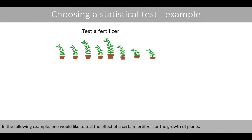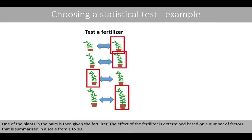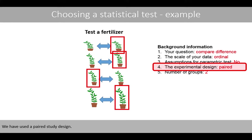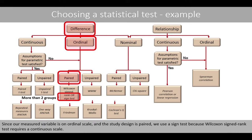In the following example, one would like to test the effect of a certain fertilizer on plant growth. Since the plants are of different sizes, one decides to pair the plants according to their condition and size, and one plant in each pair is given the fertilizer. The effect of the fertilizer is determined based on a number of factors summarized in a scale from 1 to 10, making it an ordinal scale. Since our measured variable is on an ordinal scale and the study design is paired, we use the sign test, because Wilcoxon's signed-rank test requires a continuous scale.